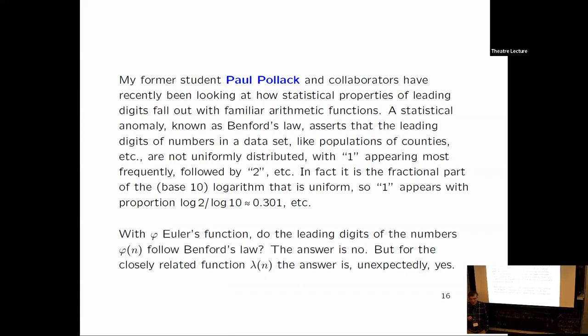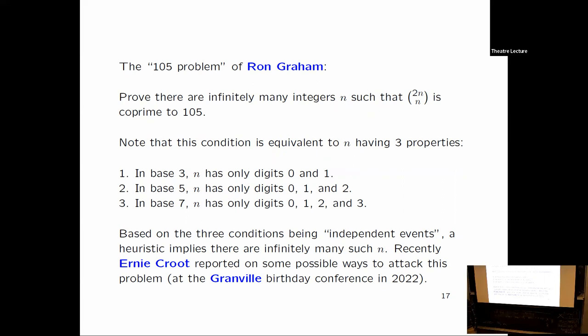It's known as Benford's law. So to make this number theory, you could take an arithmetic function like Euler's phi function and ask, how often do the numbers phi of n, as n varies, do they follow Benford's law? And Pollack and his collaborators were, no they don't. But quite recently he said that for lambda of n, the Carmichael lambda function that we saw earlier, it does follow Benford's law. So this is somewhat unexpected.